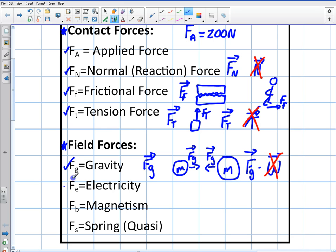Next force is electricity. So we write F sub E. If we have two charged particles, they're going to experience an electrical force towards or away from each other, depending on what we have. And those are equal and opposite too. So that's F sub E. That's electrical force.